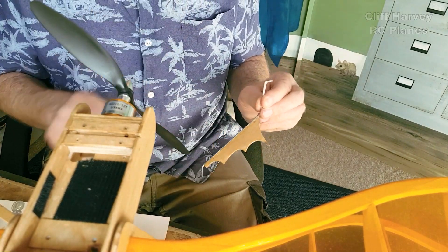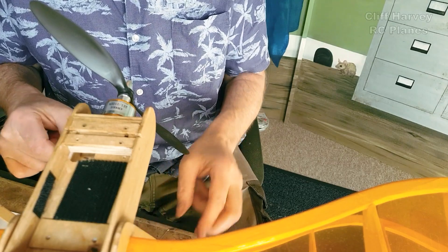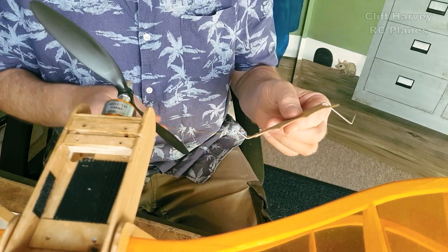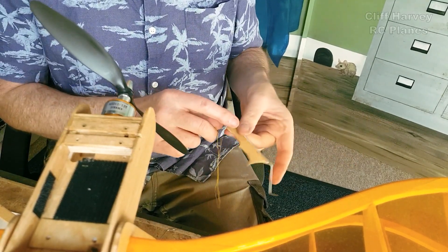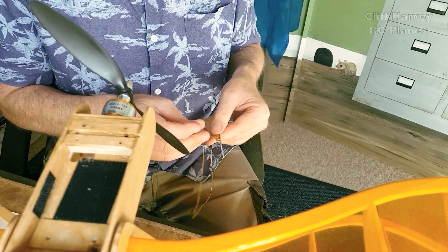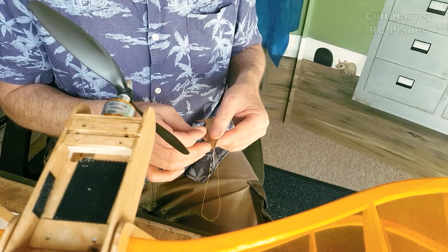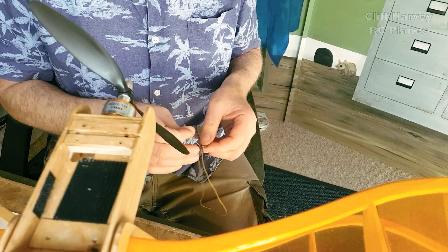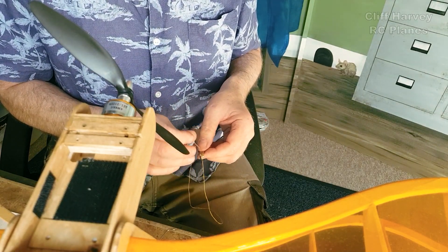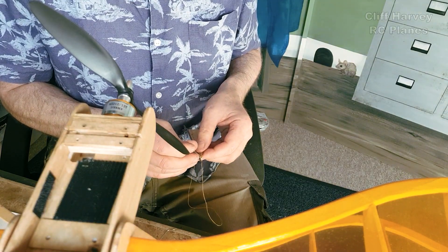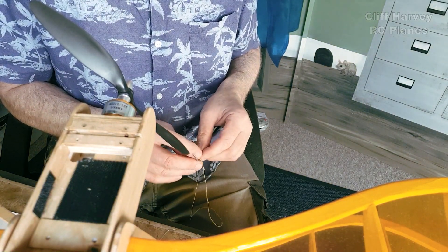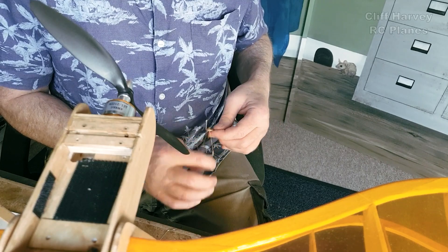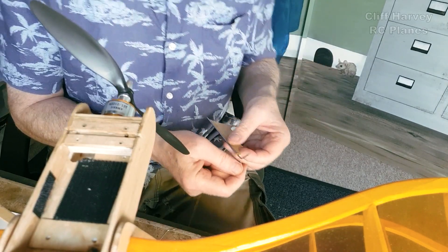Just stuck it on with CA. So I'm going to stitch the fairing onto the wire. I just made a start here. Got to handle it carefully because it is only CA'd on and it could get knocked off.